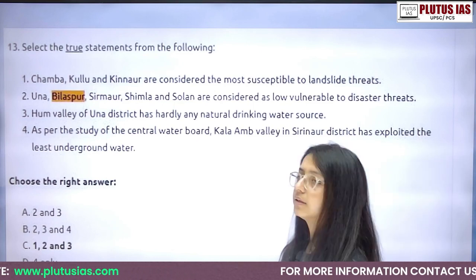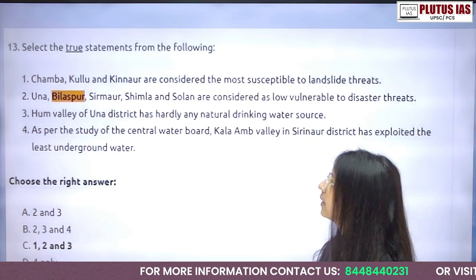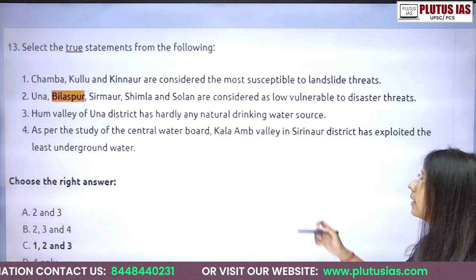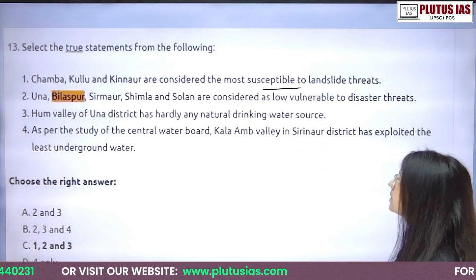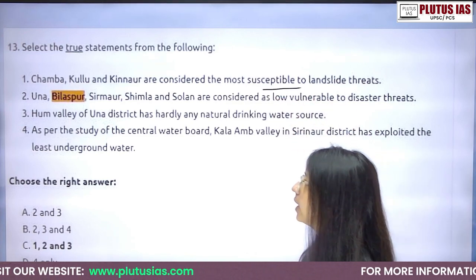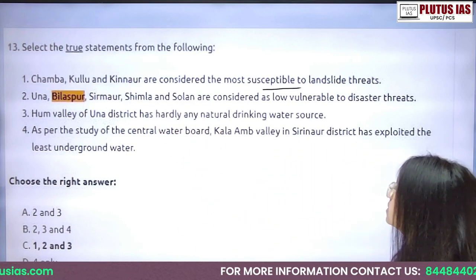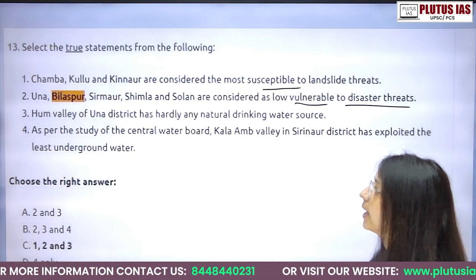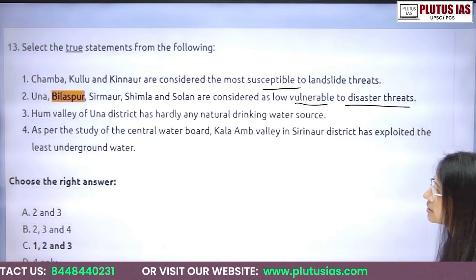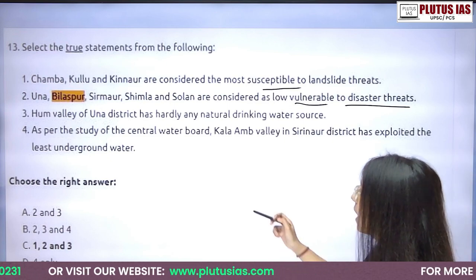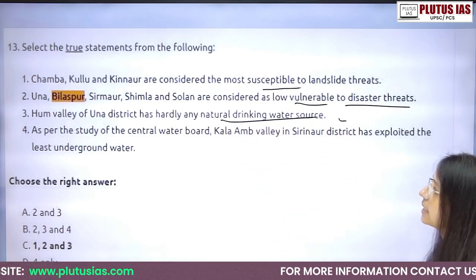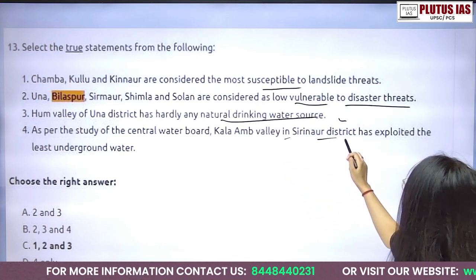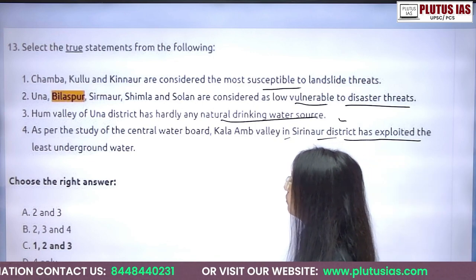The same type of question was asked in the 2021 HPS exam: 'State the true statement from the following.' Chamba, Kullu, and Kinnaur are considered the most susceptible to landslide threats. Una, Bilaspur, Sirmaur, Shimla, and Solan are considered low-vulnerability disaster districts. The Hum Valley of Una has no natural drinking water source. As per the Central Water Board study, Kala Ambelli in Sirmaur District has exploited the least underground water.